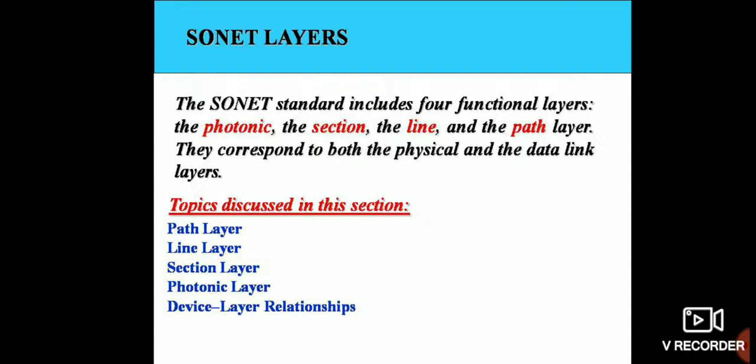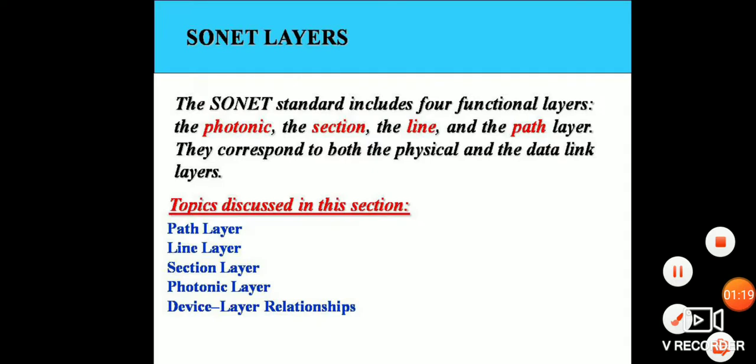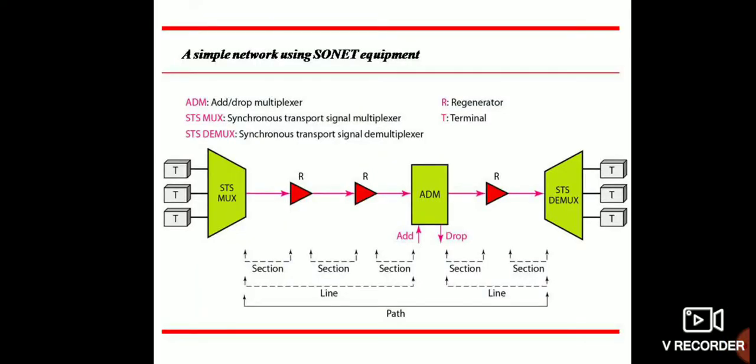Going up to the process at the receiver, a simple network using SONET is shown in figure. It has three inputs: 1, 2, 3, and STS multiplexer. This is the repeater, section 1, repeater, section 2, and then add-drop multiplexer, and then repeater and the STS demultiplexer, and we get the final output.